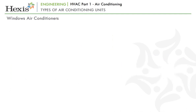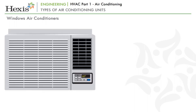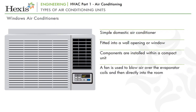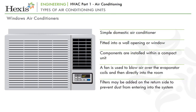Window air conditioners are the most basic type — simple domestic air conditioners fitted into an opening in the wall or window, used in facilities where other systems are not possible to install. In this type of unit, all components are installed within a compact unit. A fan is used to blow air over the evaporator coils and directly into the room. Filters may be added on the return side to prevent dust from entering the system.